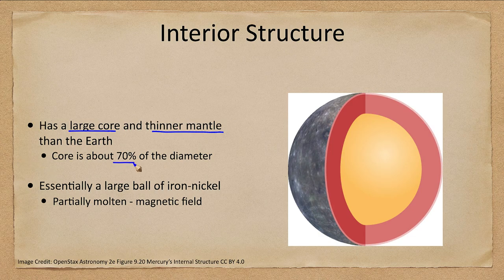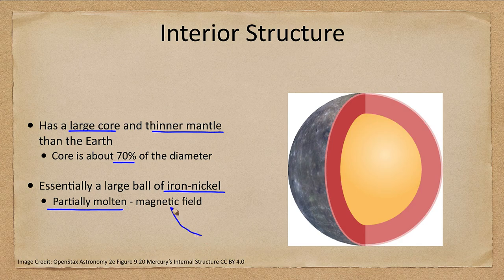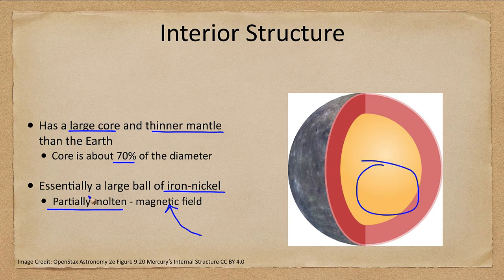The core is actually about 70% of the diameter, so Mercury is essentially a large ball of iron and nickel. We also know that it is partially molten. Mercury has a weak magnetic field — not as powerful as Earth's — but it does have some magnetic field, meaning that part of the core must be molten to generate that magnetic field.